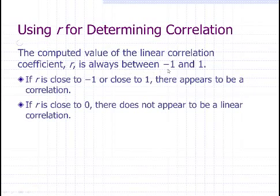So r is always between a positive one and a negative one. So a positive one means as x goes up by one unit, y goes up by one unit, or vice versa. So if r is close to a positive or negative one, there appears to be a correlation.